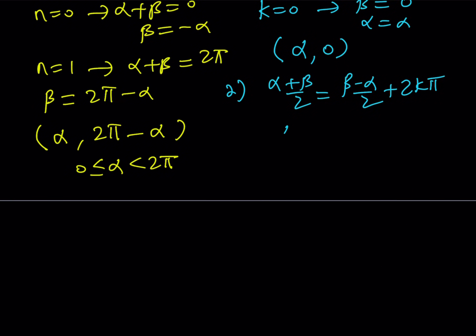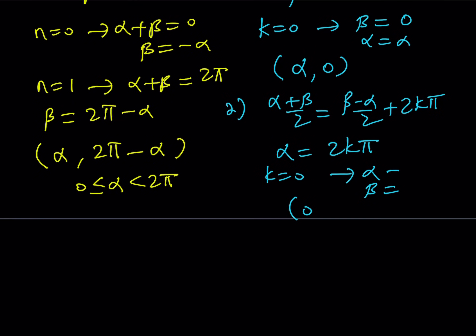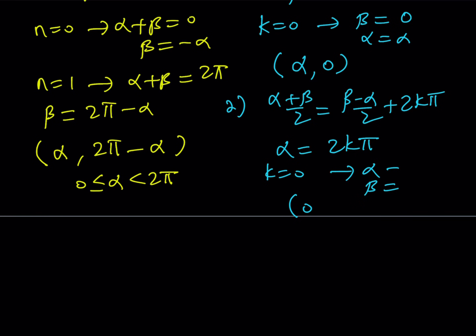We're going to get alpha equals 2k pi, and if k is equal to 0, alpha will be 0, and beta will be beta. And that is going to give me the ordered pair 0 comma beta. If you replace k with 0, alpha is going to be 0, and beta is just going to stay as beta. So, my solution as an ordered pair is going to be written as 0 comma beta.